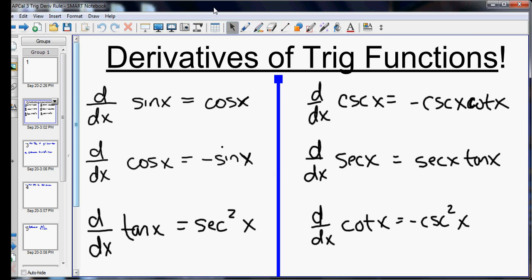For secant x, the derivative is secant x tangent x. And the derivative of cosecant is negative cosecant x cotangent x.